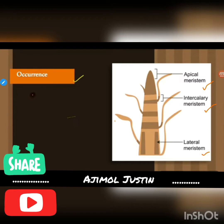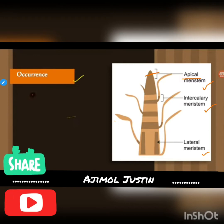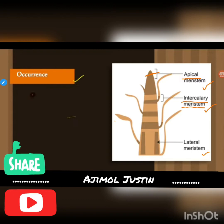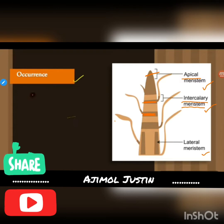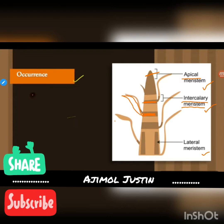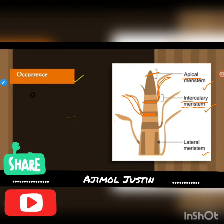In apical meristem, as the name suggests, it is found in the apex — the tip — of the plant. Intercalary meristem is found on the nodes. A node is the structure from which a leaf or a stem arises.